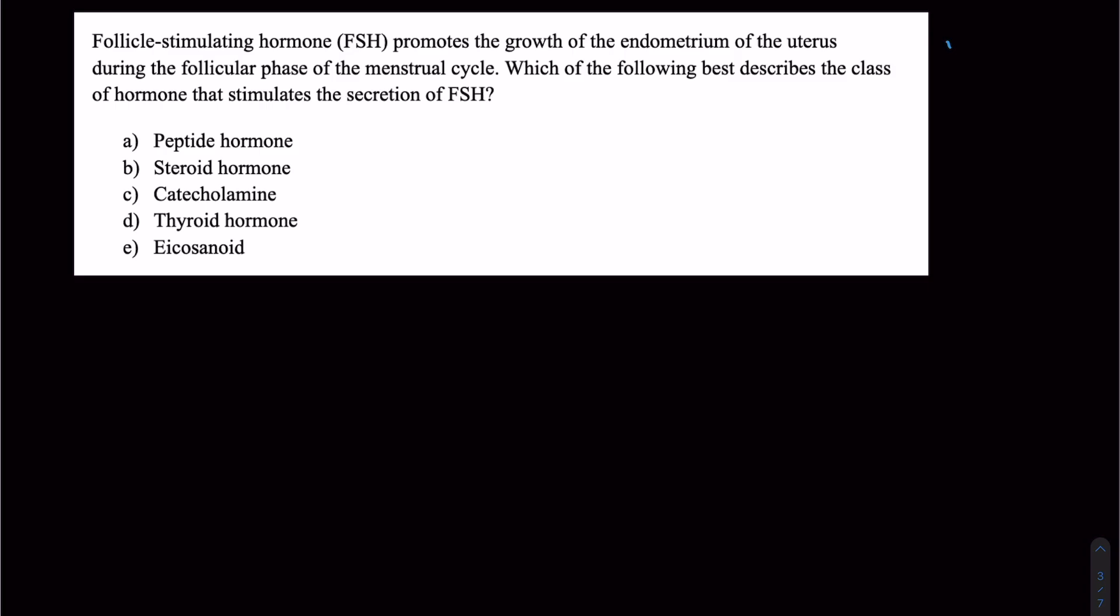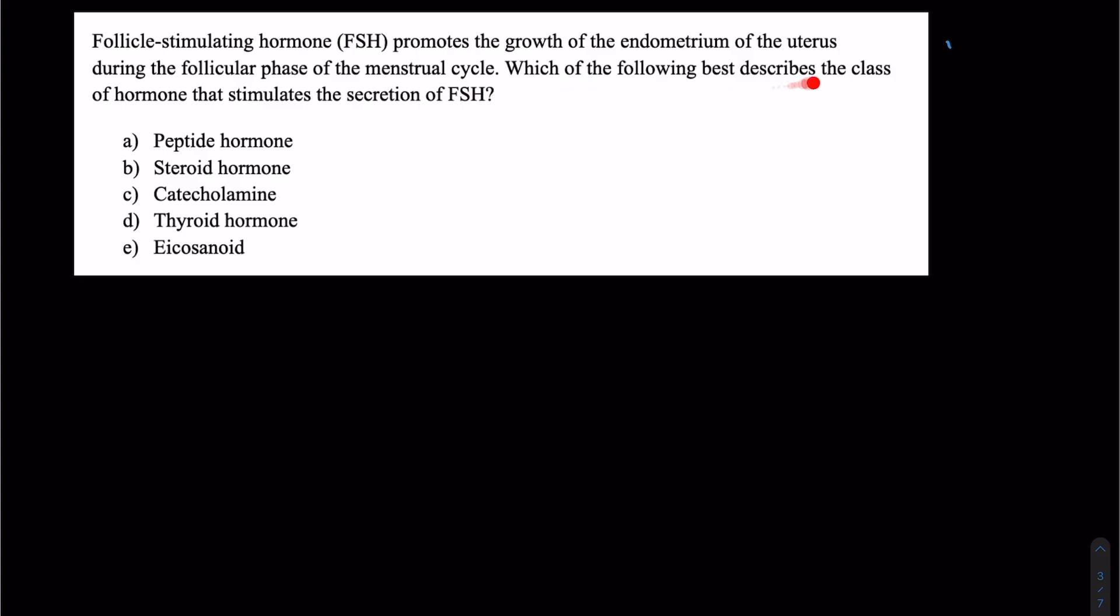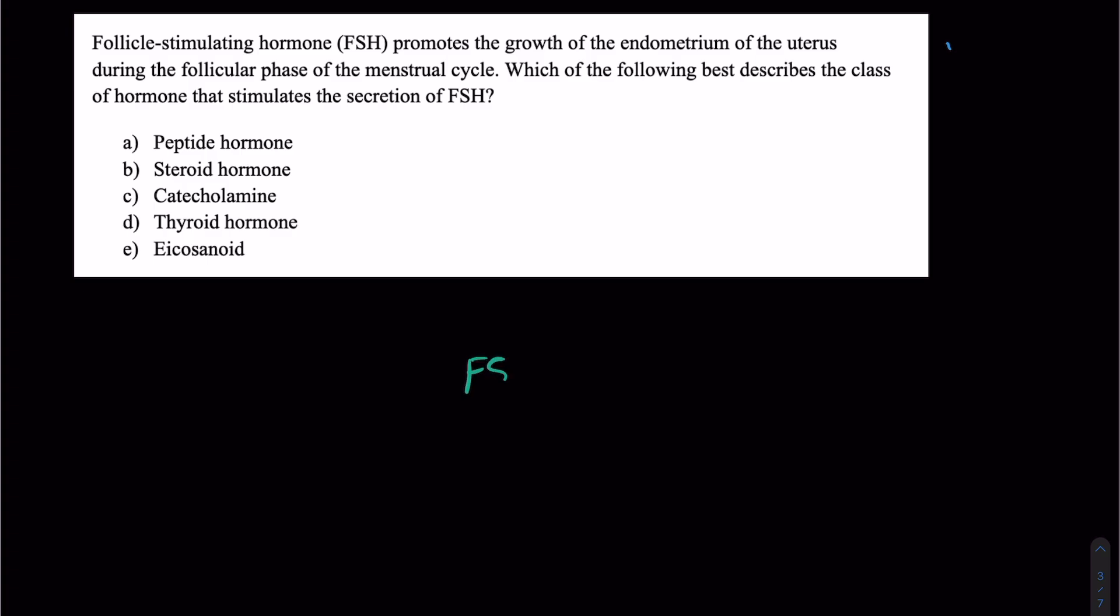Next let's jump into some practice problems. For each of these, I want you to pause the video and try it on your own before I jump into the explanation. First, follicle-stimulating hormone promotes the growth of the endometrium of the uterus during the follicular phase of the menstrual cycle. Which of the following best describes the class of hormone that stimulates the secretion of FSH? If we remember the hormone axis that we drew before, the hypothalamus releases gonadotropin-releasing hormone that stimulates FSH. We have to ask ourselves, what class of hormone is it?